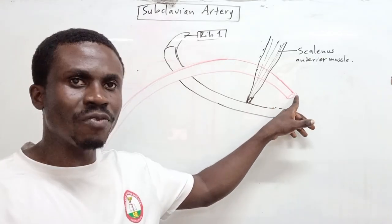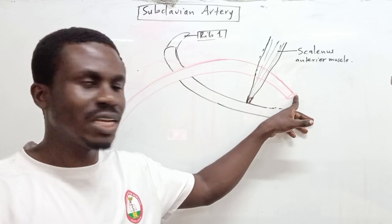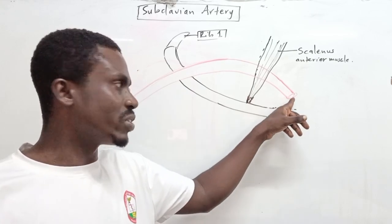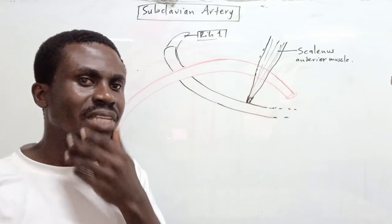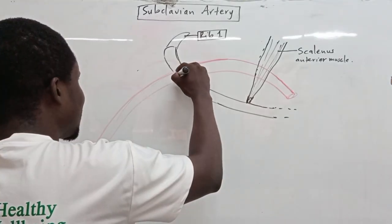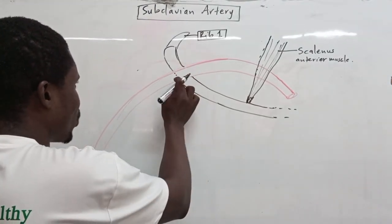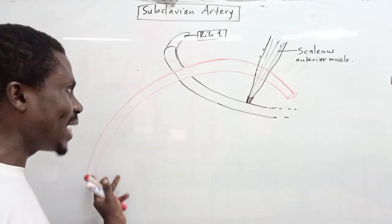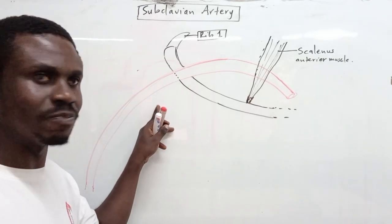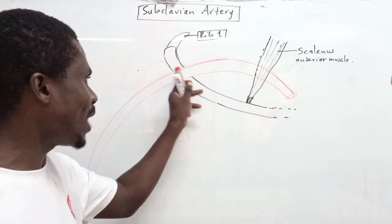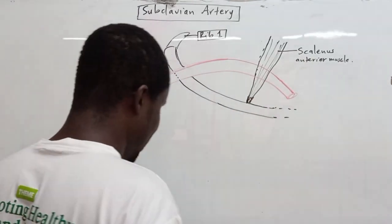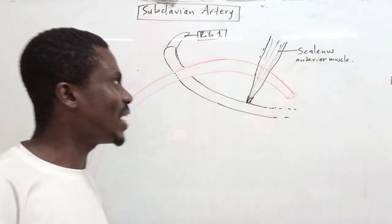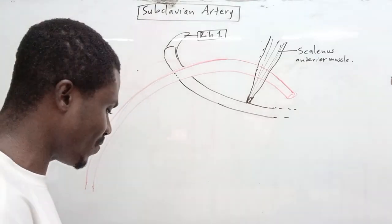The subclavian artery extends from its origin — the arch of the aorta for the left, or the brachiocephalic trunk for the right — all the way to the outer border of the first rib. Beyond the outer border of the first rib, the name changes to become the axillary artery. That is the full extent of the subclavian artery.